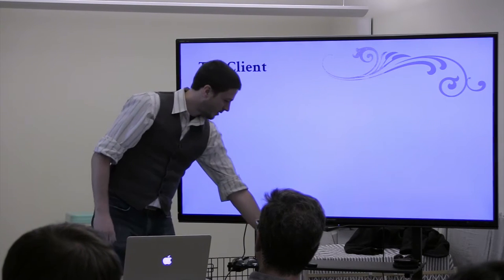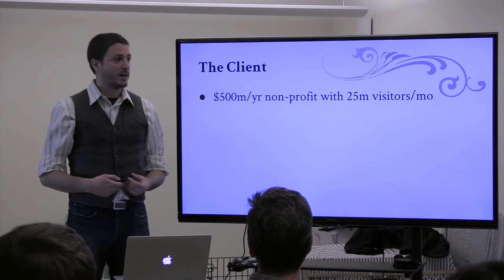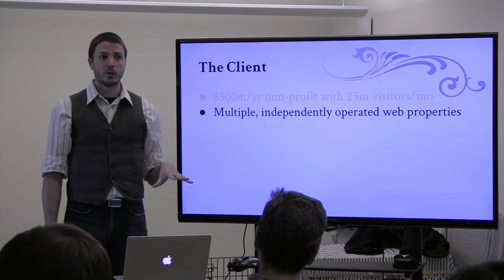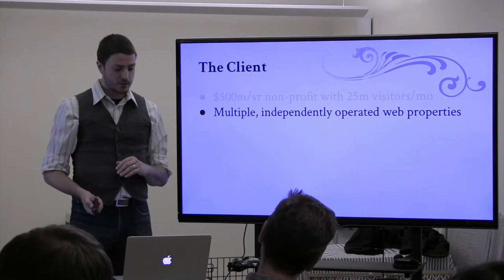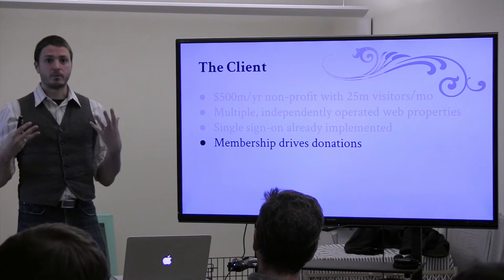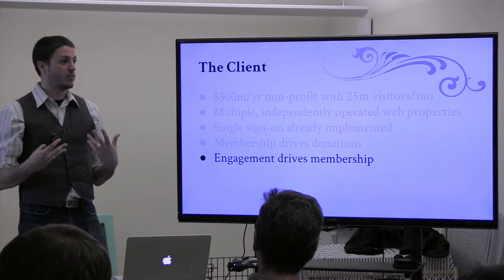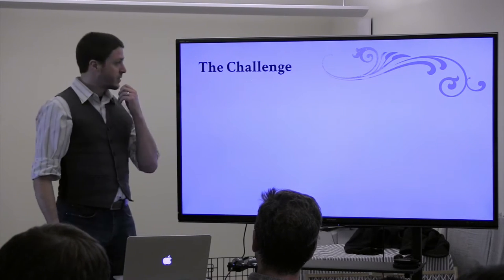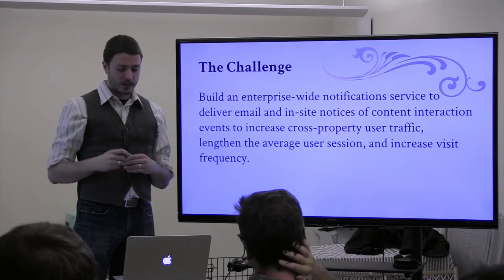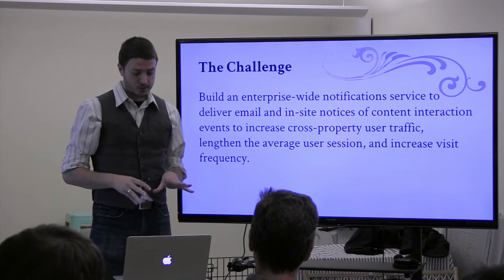The client is a half-a-billion-a-year nonprofit. Their web properties get about 25 million visitors per month. Across their enterprise, they have multiple independently operated web properties — different groups within the organization run their own web. They'd already implemented single sign-on. The goal for their web properties is that membership — having a user account — drives donations. They really needed to find ways to get people more engaged, so the challenge was to build an enterprise-wide notification service, exactly like the Facebook notification service.